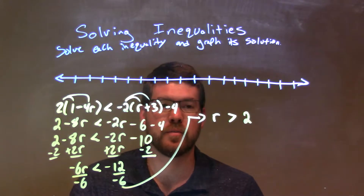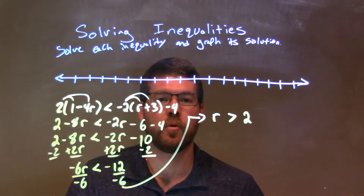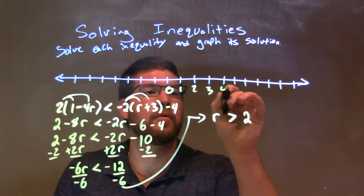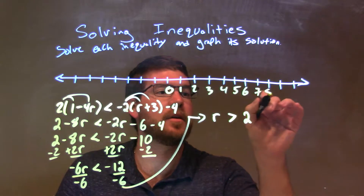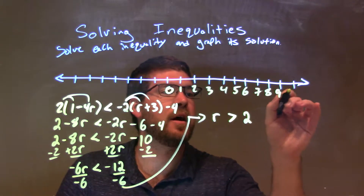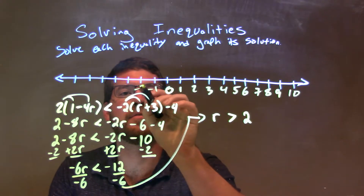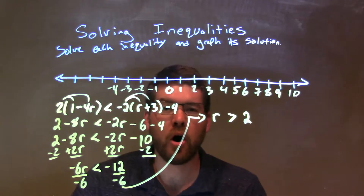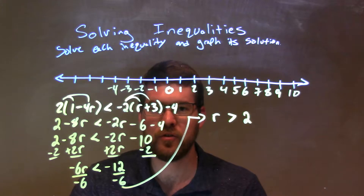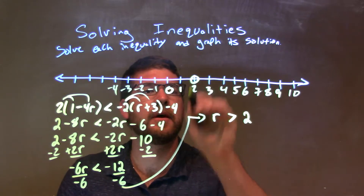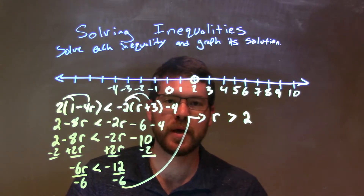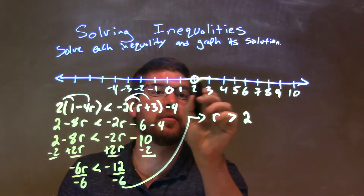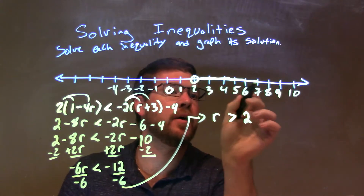And so we have a final answer. Let's go graph it. We have 0, 1, 2, 3, 4, 5, 6, 7, 8, 9 — let's go to 10. Negative 1, negative 2, negative 3, negative 4. So r is greater than 2. We put an open circle at 2 and then shade to the right, because r is greater than 2.